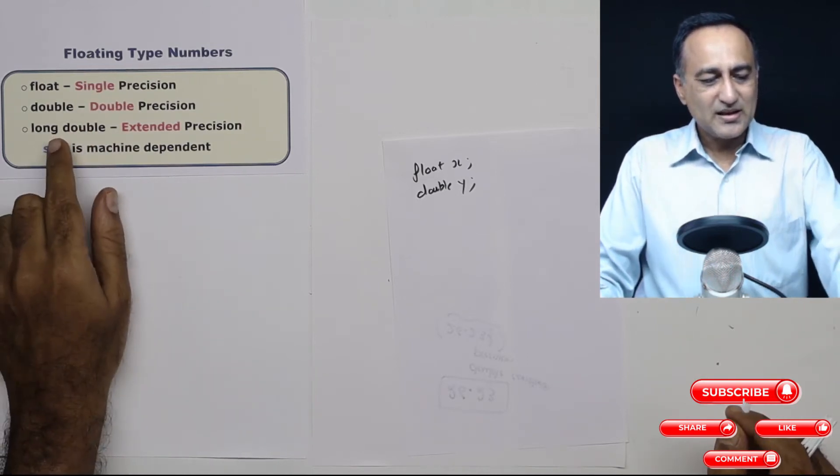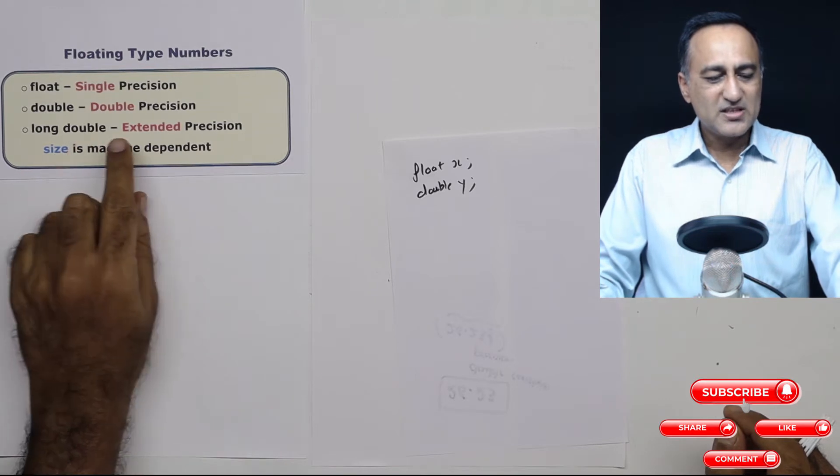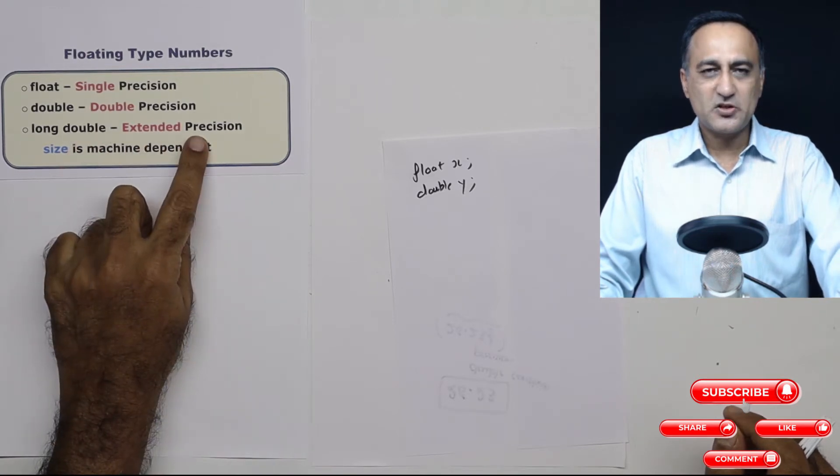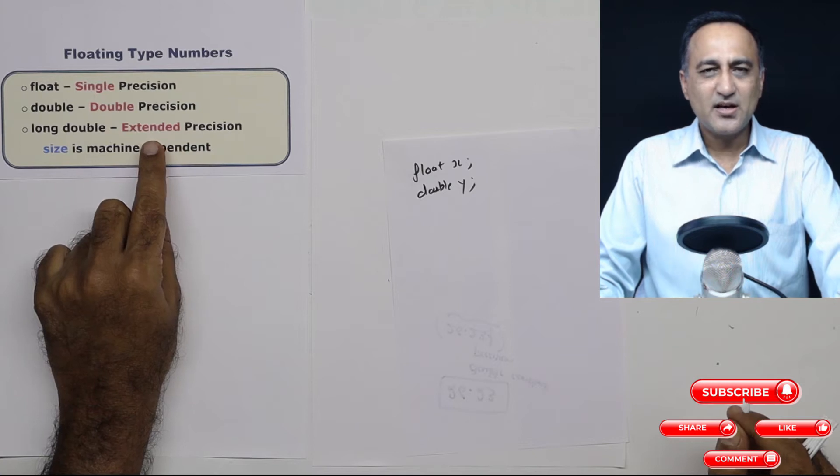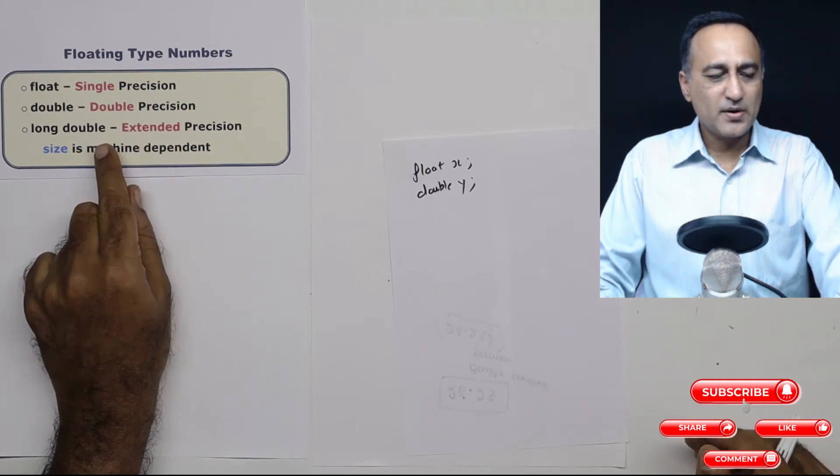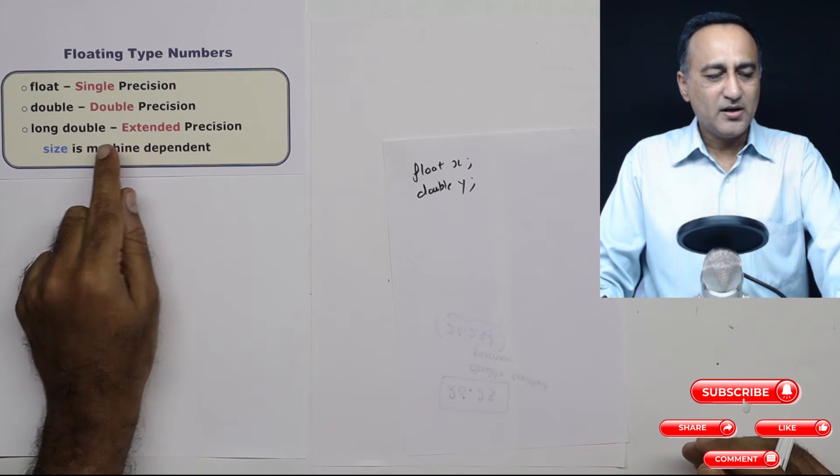C also has a long double which is of the type extended precision. We won't be discussing much about this. As and when we come across problems involving long double we will take a look at it.